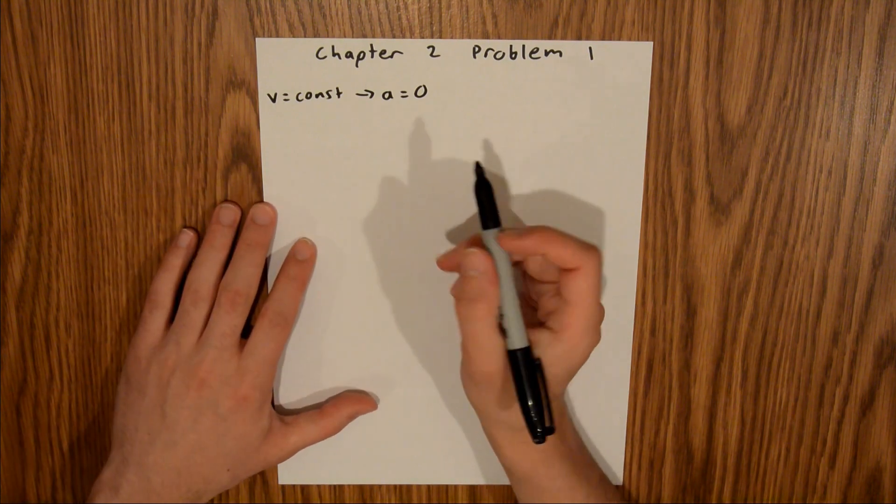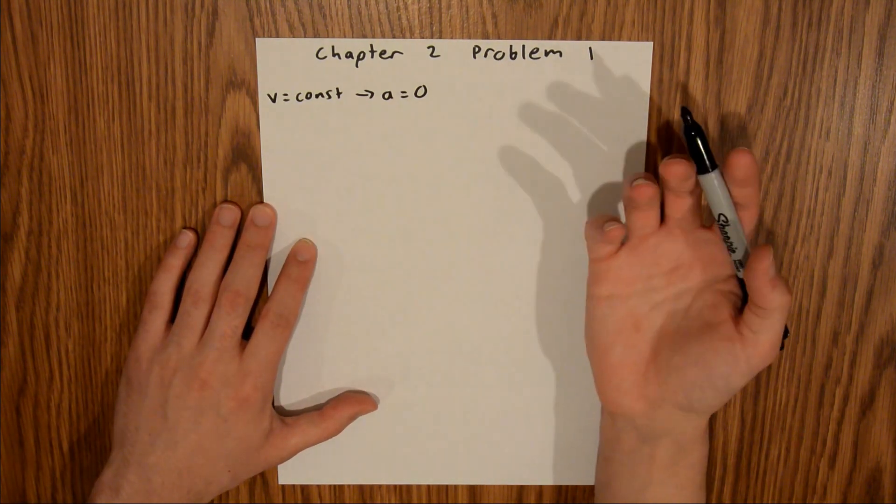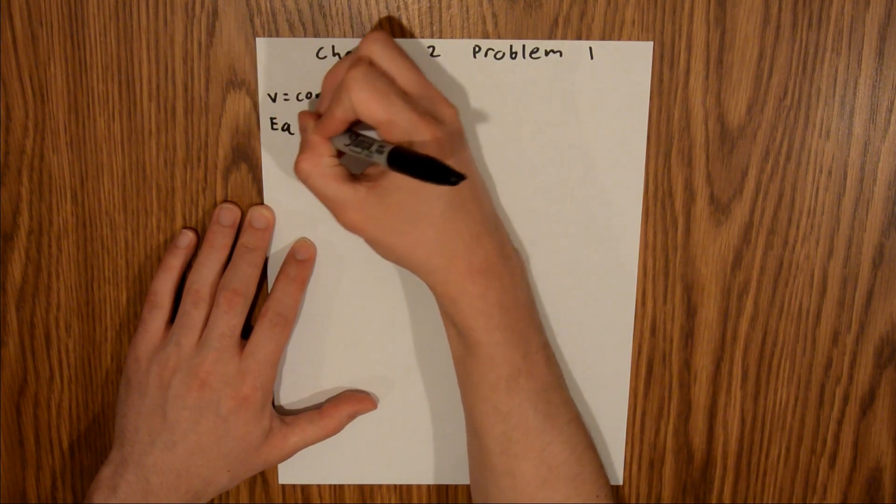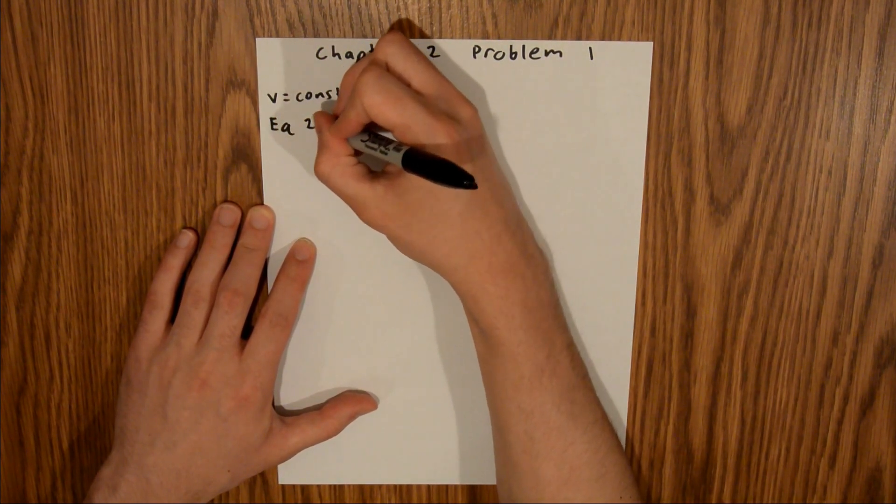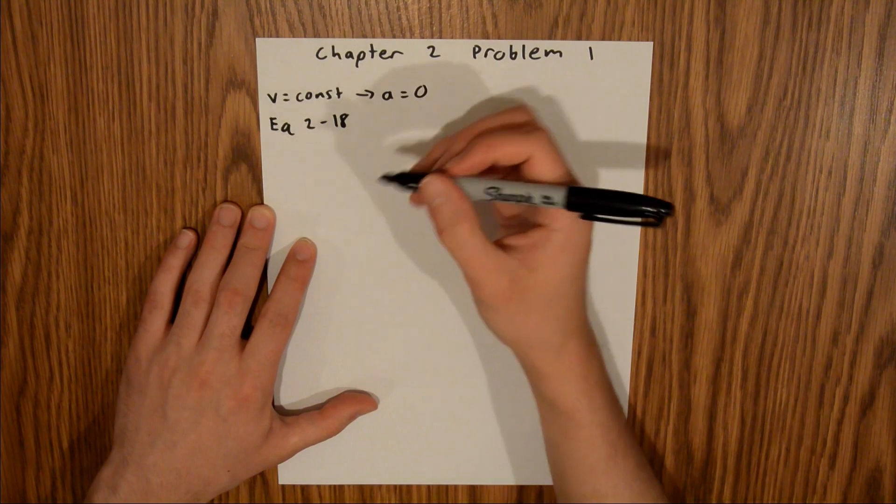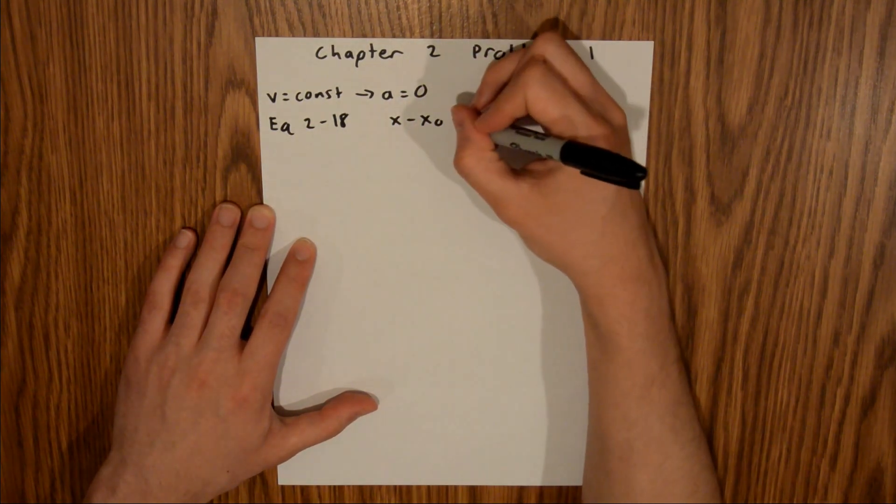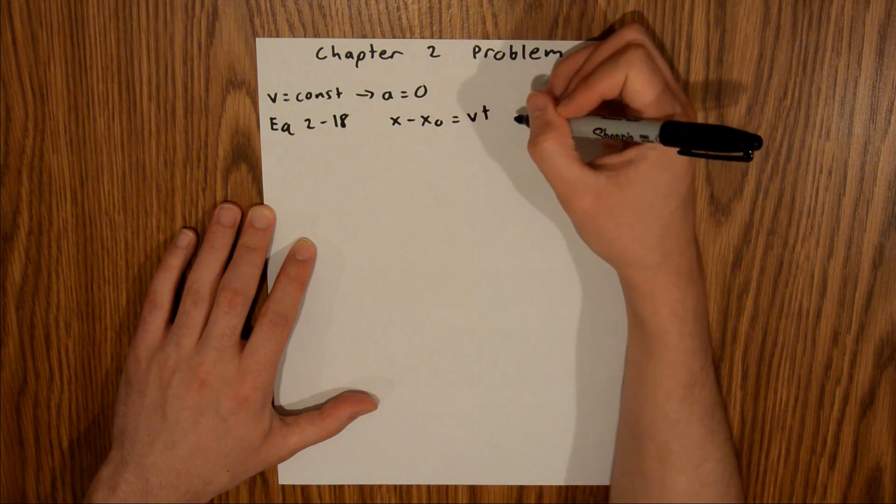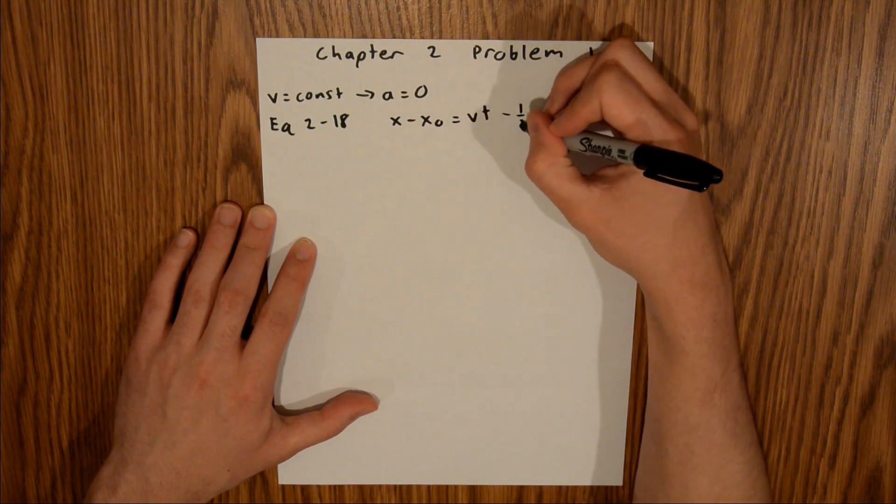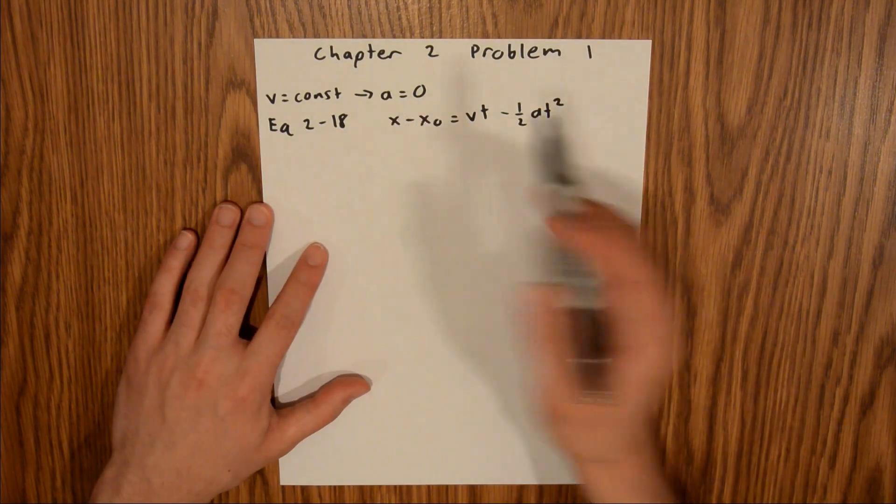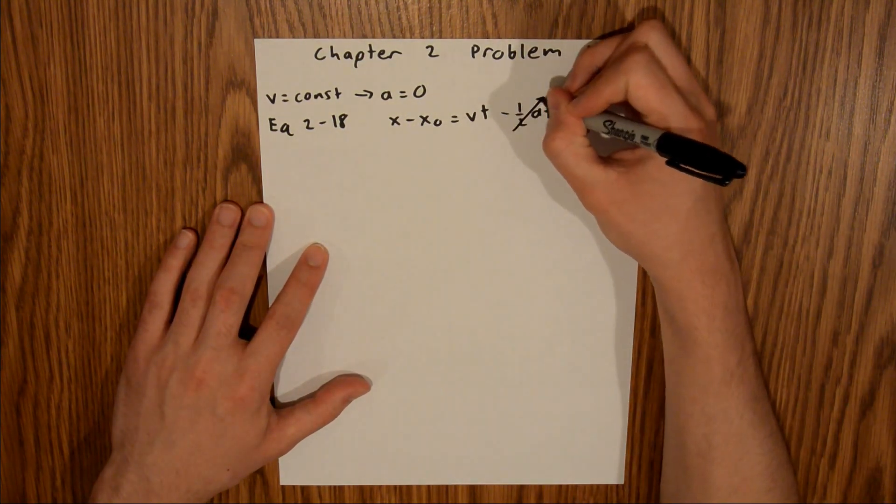Since acceleration is 0, that means your acceleration is also constant, and that means we can use equation 2-18 in the textbook, which is x minus x naught is equal to vt minus 1 half at squared. As we said, a is equal to 0 here. This entire term will just go to 0.